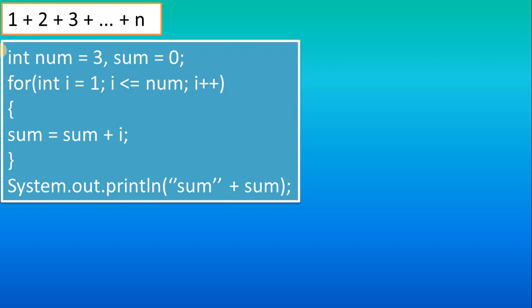I am interested to find the sum of the first 3 numbers. So I have written num = 3. Suppose you are interested to find the sum of the first 5 numbers, you would write 5. Then sum = 0.